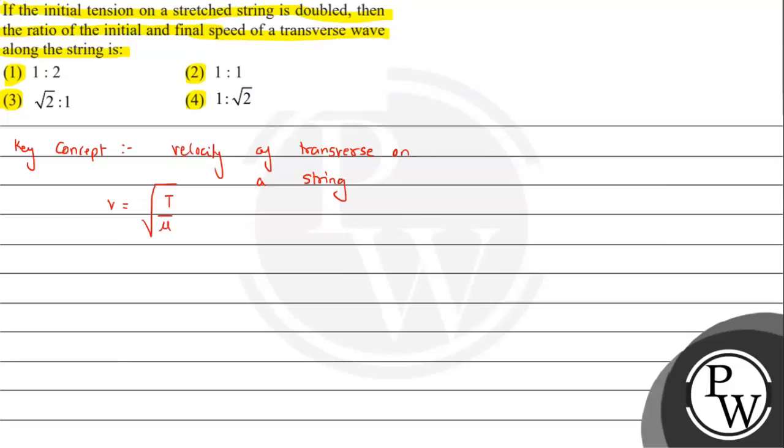V is the speed of the transverse wave. Here we can see the situation with tension - v is in direct relation with root T. V is directly proportional to root T we can say, because the initial tension on the stretched string is doubled.